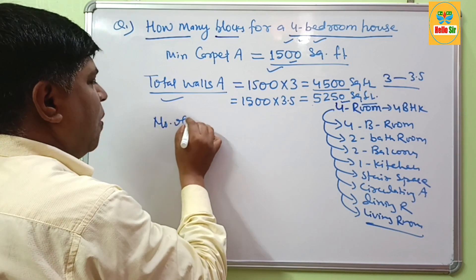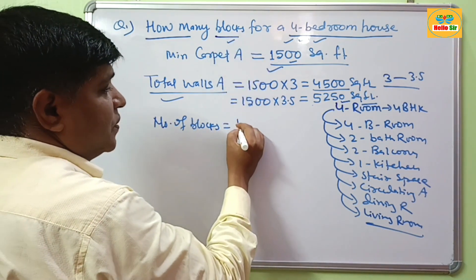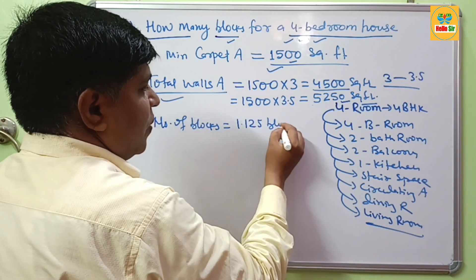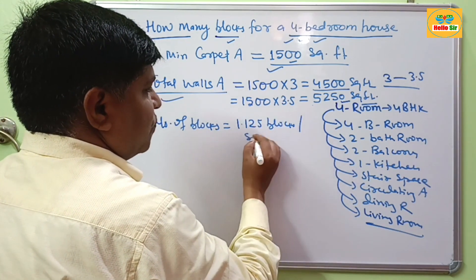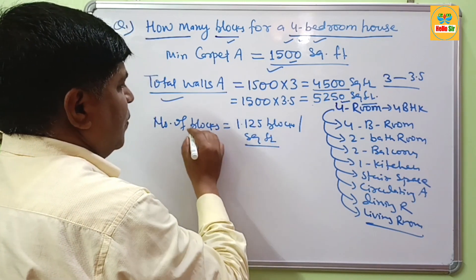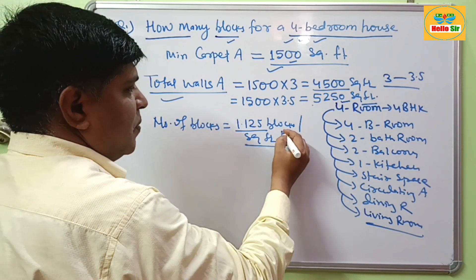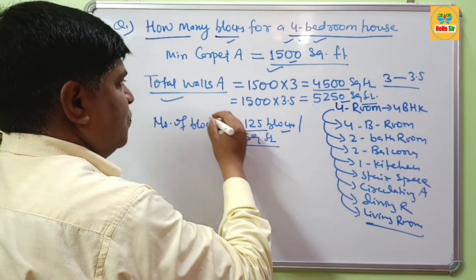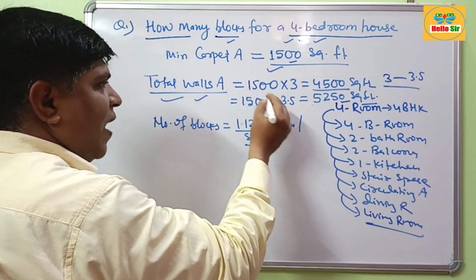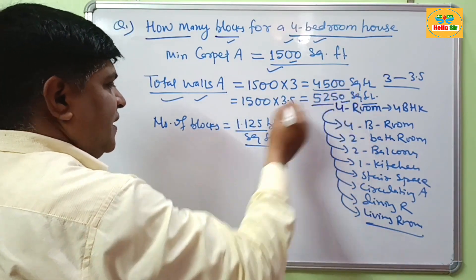The number of blocks required per square foot is about 1.125 blocks per square foot. This means that 1 square foot of block wall requires 1.125 blocks for the construction of interior or exterior walls.